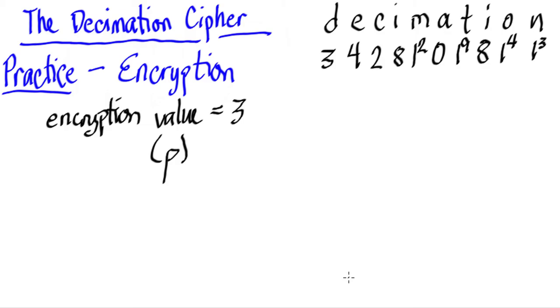The second step would be those letters now are formed into numbers. Since our encryption value is equal to 3, what we're going to do is multiply all those numbers here by 3. So what will happen is that all of these numbers will be multiplied by 3, and then we're going to put that in mod 26. But first off, before that, let's just put them and multiply them by 3.